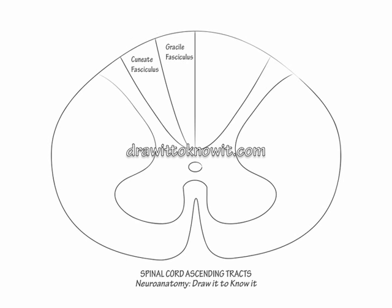Write thoracic level 6 over the posterior intermediate septum to indicate that the gracile fasciculus carries large fiber sensory information from the lower body, T6 and below, and the cuneate fasciculus carries sensory information from the upper body, T7 and above. A mnemonic for the gracile fasciculus is that ballerinas must have good sensory input from their feet to twirl gracefully. Sensory information from the face travels via the trigeminal sensory system. The gracile and cuneate fasciculi are jointly referred to as the posterior column pathways because of their location in the posterior column of the spinal cord.